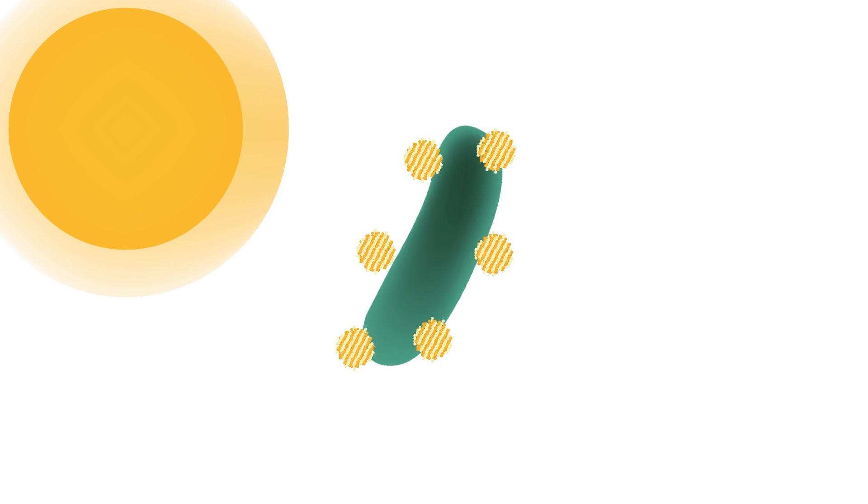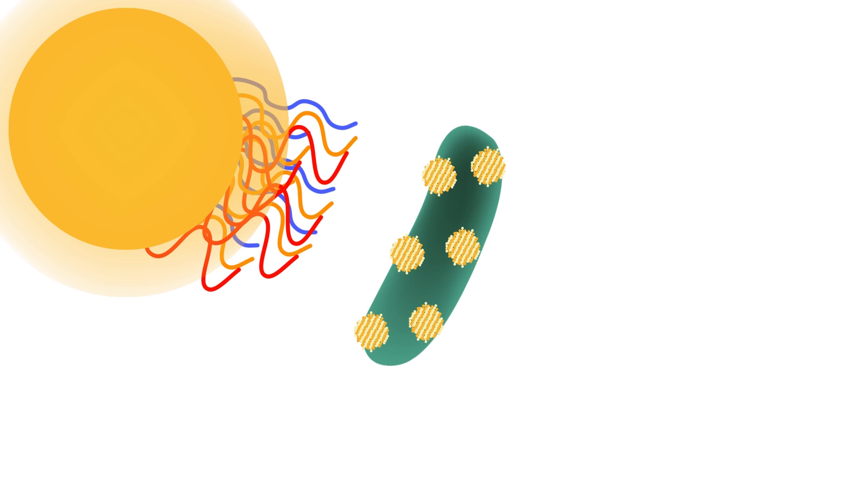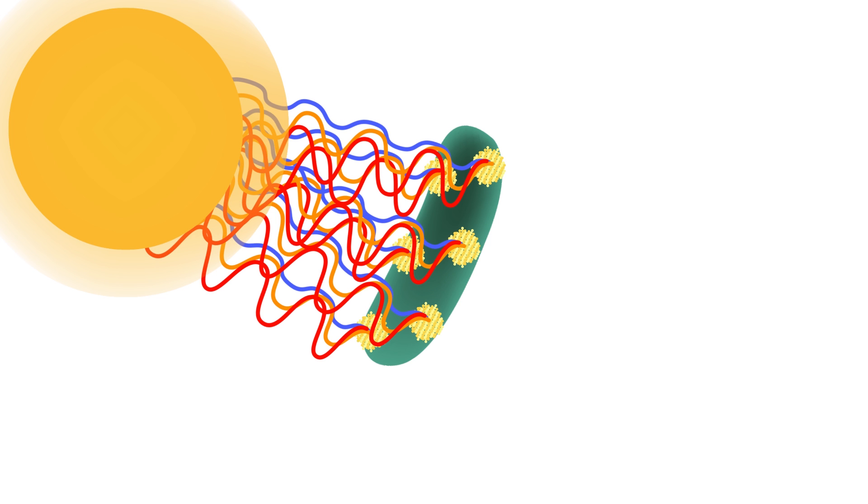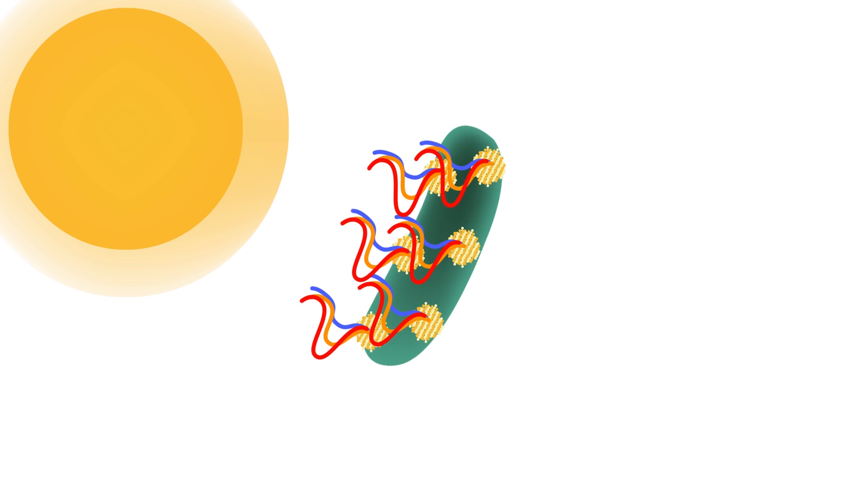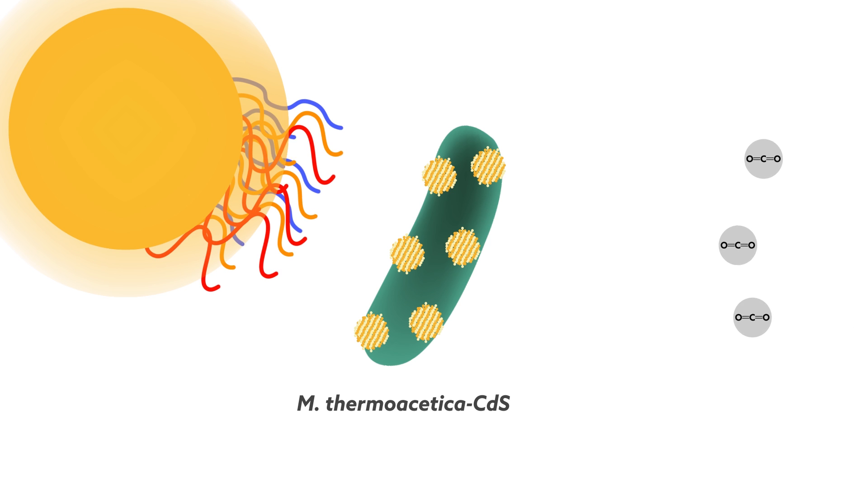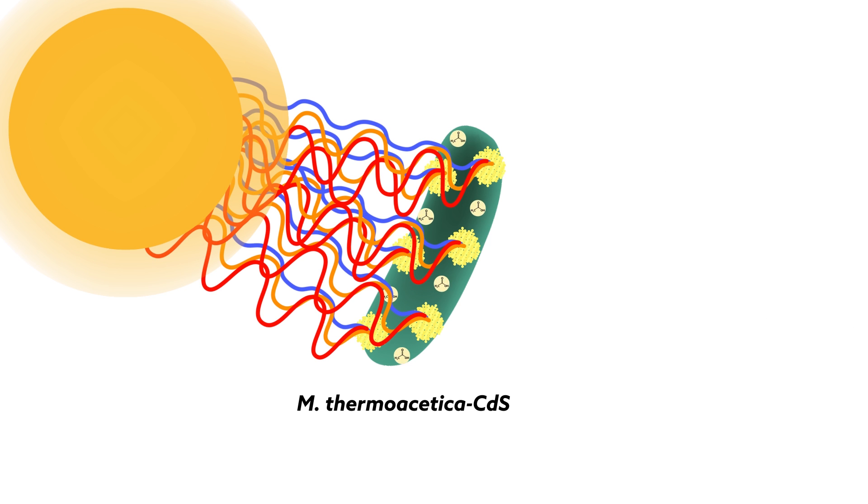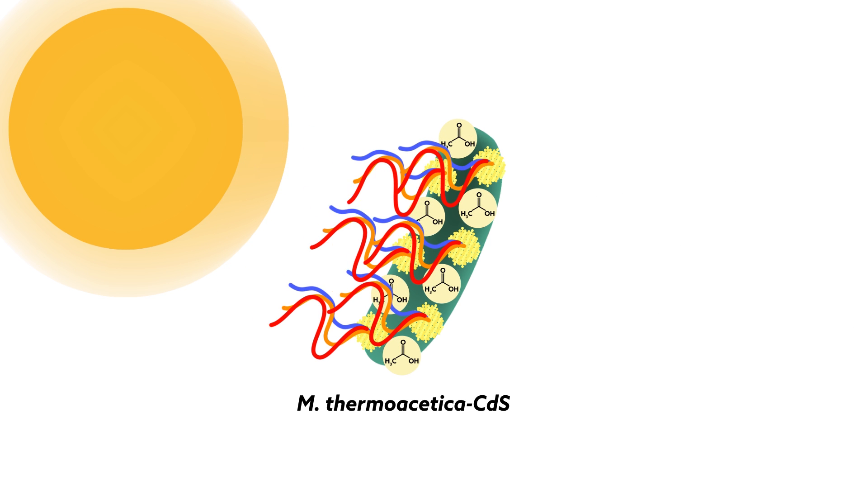When Sakamoto fed cadmium and the amino acid cysteine to the bacteria, they synthesized cadmium sulfide nanoparticles, which function as solar panels, on their surfaces. The hybrid organism, M. thermoacetica-CdS, produces acetic acid from CO2, water, and light.